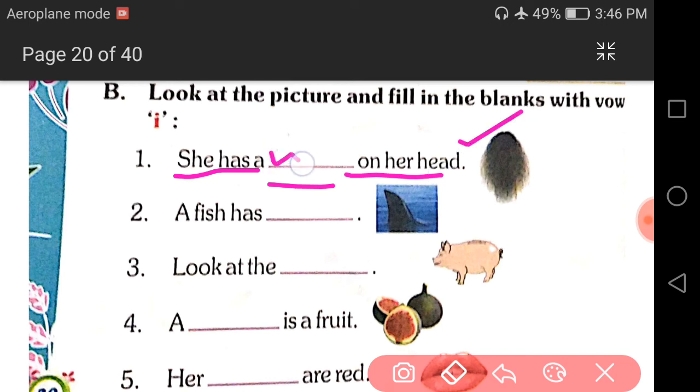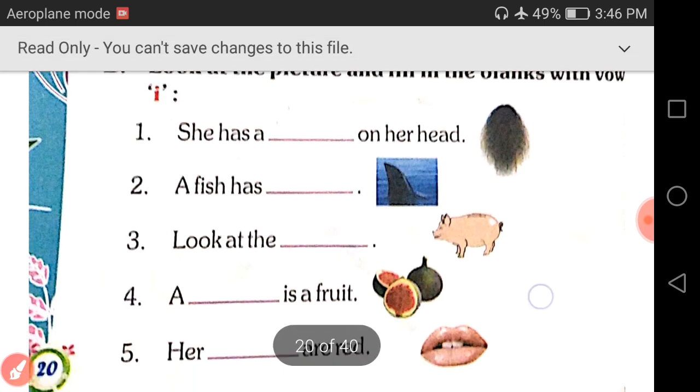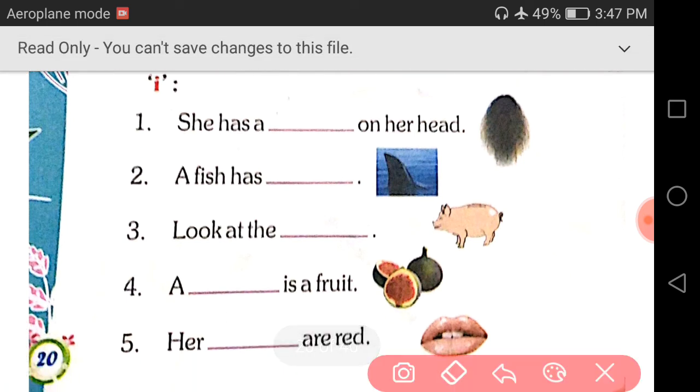A wig. W-I-G, wig. Write down wig. W-I-G, wig. Next, number two. A fish has dash.